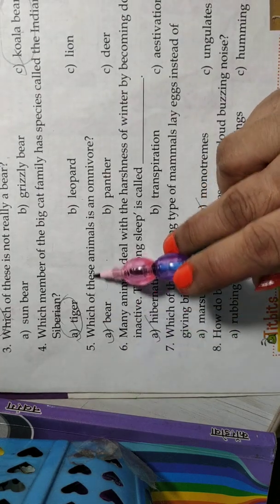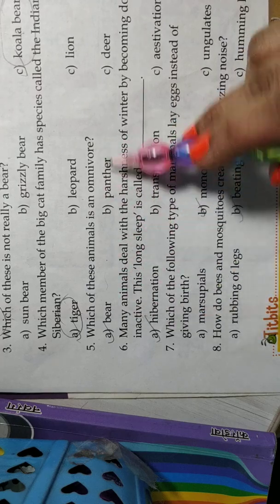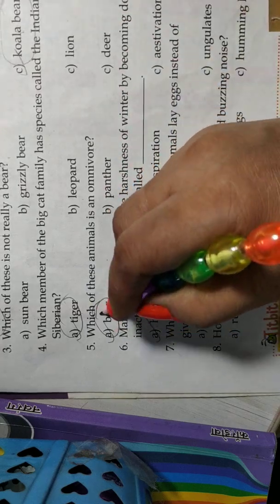Question number 5. Which of these animals is an omnivore? Options are bear, panther, deer. Bear is the correct answer.